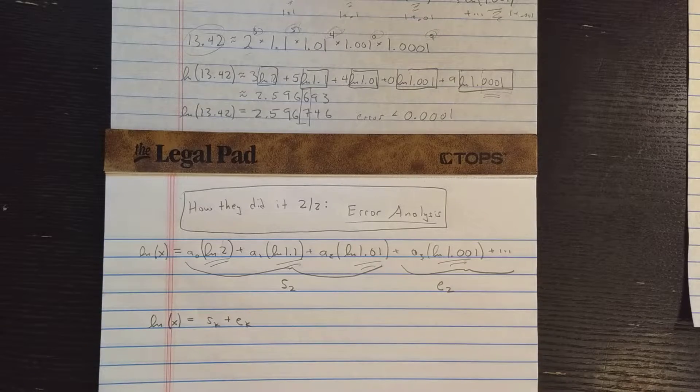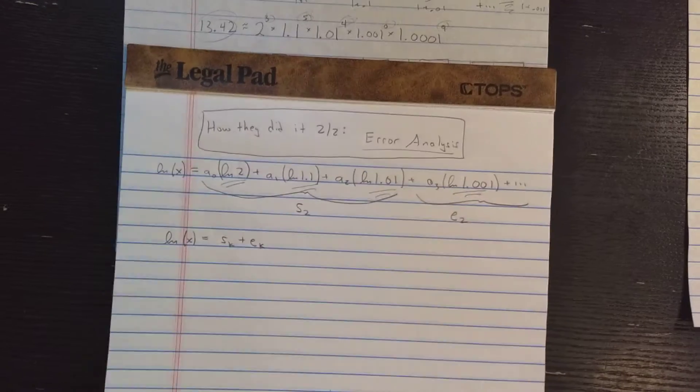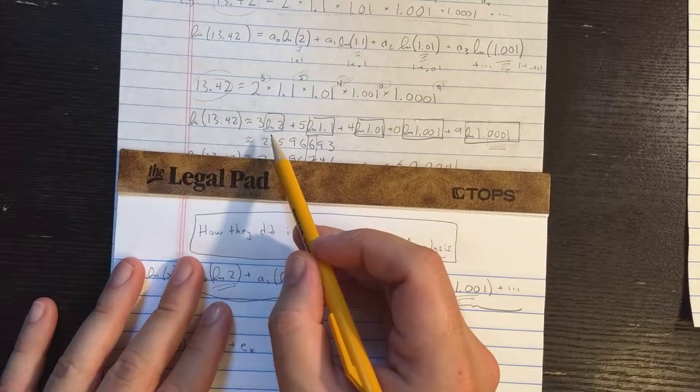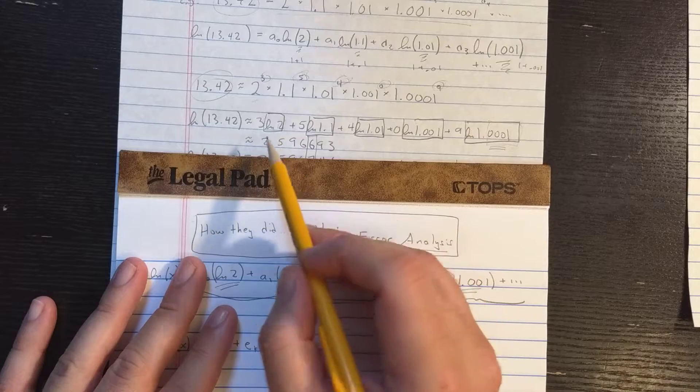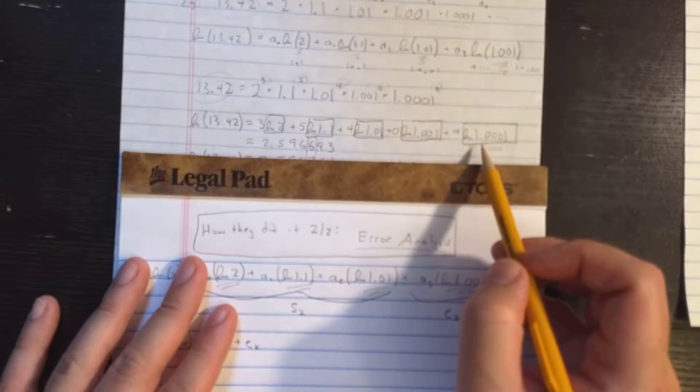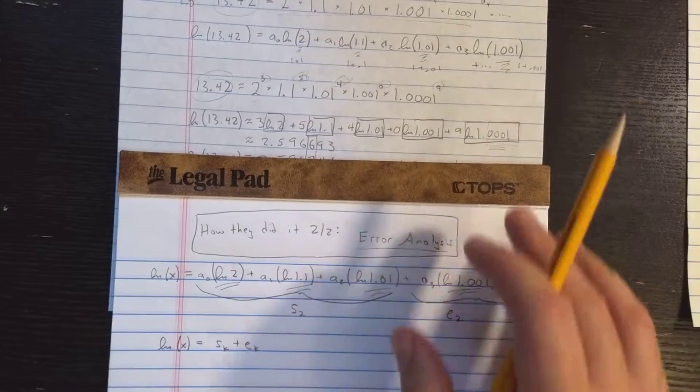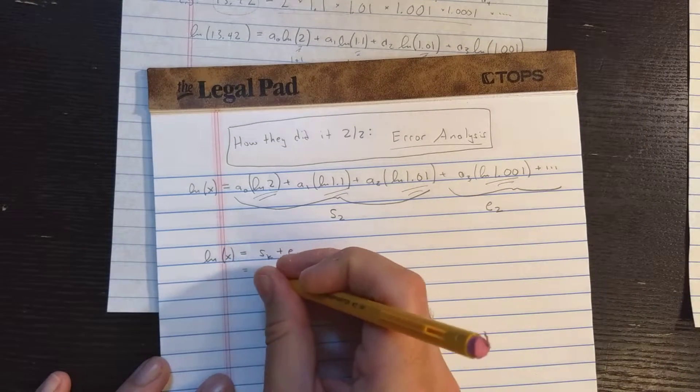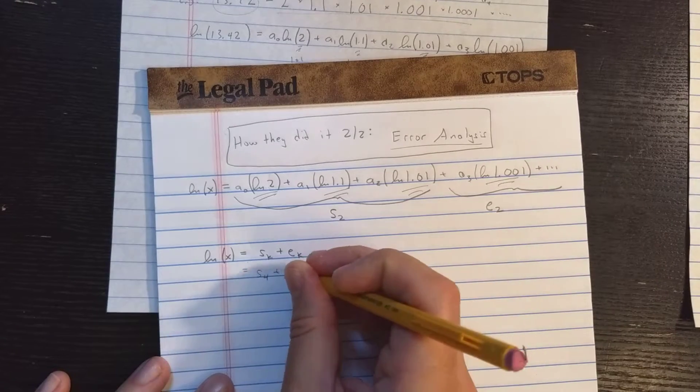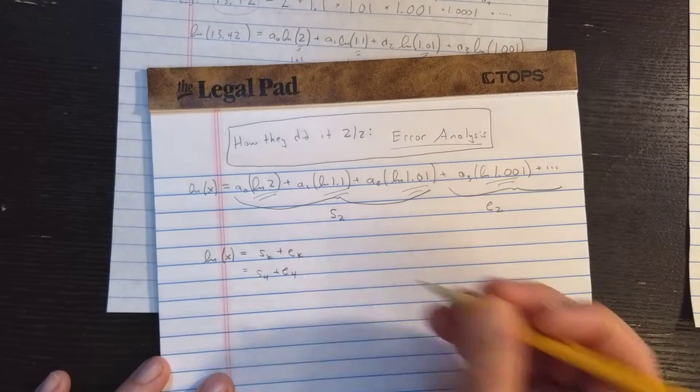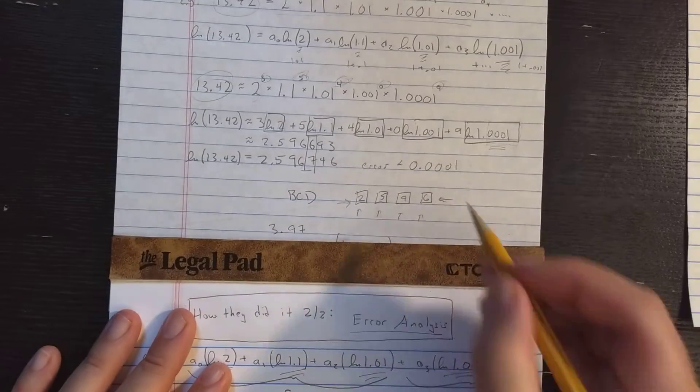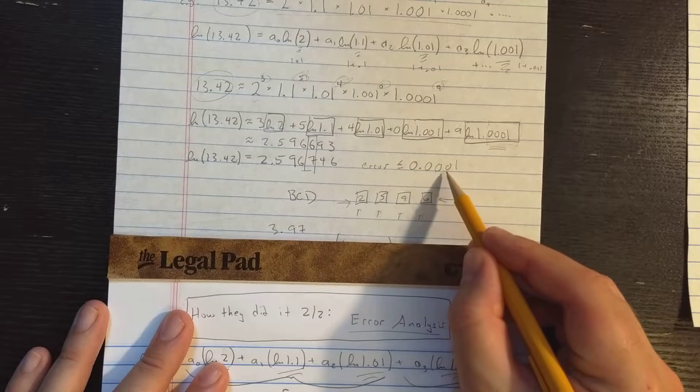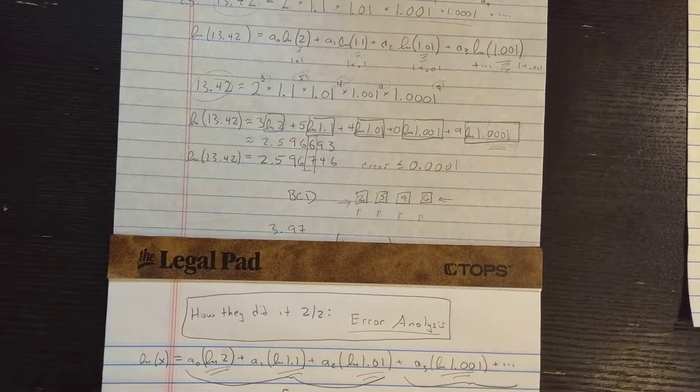What we want to do is put a bound on ek. We want to explain how big ek can possibly be. Let's see. In our example, we use 1, 2, 3, 4, 5 terms, so this would be S4. So let's look at S4 and E4. I claimed in the last video that the error was less or equal, should be 0.0001. Let's see if we can prove that.